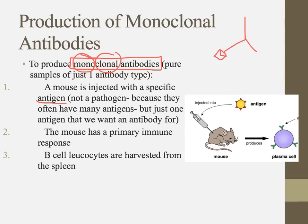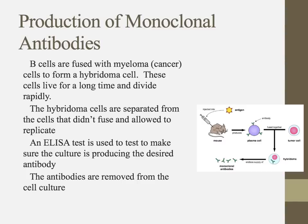The mouse gets sick and has a primary immune response. We harvest those B cells that are starting to copy themselves to make antibodies. We then fuse those B cells with myeloma cells — a type of cancer. The fusion product is called a hybridoma: hybrid meaning more than one cell, oma referring to the cancerous cell. Cancerous cells were chosen because they live a long time and divide rapidly, making large quantities of antibodies possible.